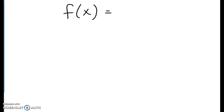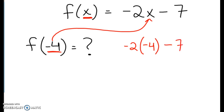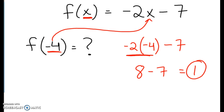Let's say we are given f of x equals negative 2x minus 7, and we have f of negative 4. We were given our input value — notice that negative 4 is in place of where x goes. So we plug negative 4 in for x: negative 2 times negative 4 minus 7. A negative times a negative is always a positive, so we get 8 minus 7, which equals 1. So f of negative 4 equals 1.